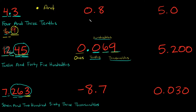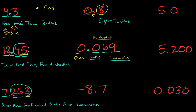Now we have 0.8. The proper way of reading this — ignoring the zero and decimal — what number is this? Eight. What place value does it end in? Simply the tenths place. So I would read that as 'eight tenths.' I could say 'zero and eight tenths,' but whenever you have a zero in the ones place it doesn't add any value. So 0.8 you would simply read as 'eight tenths.'